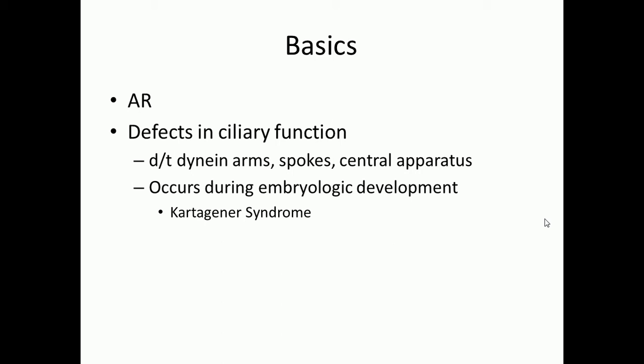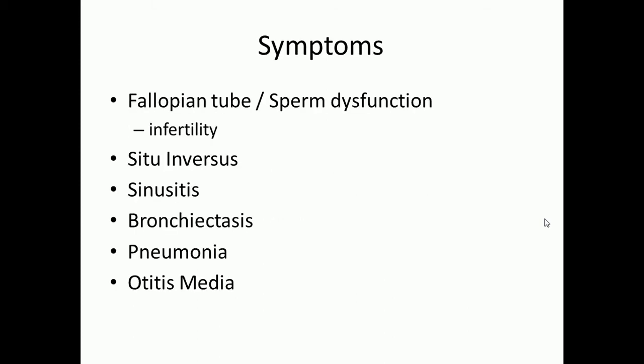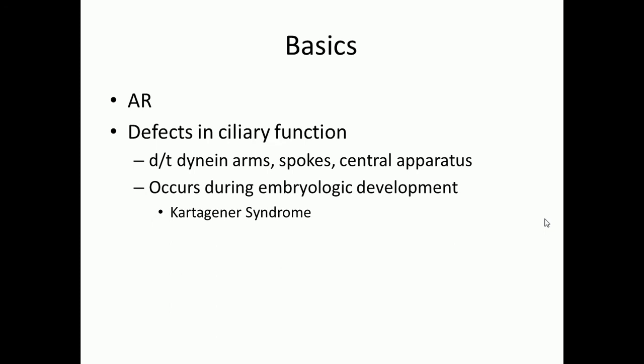Cilia are used throughout the body, including during embryologic development. A disorder called Kartagener syndrome results from primary ciliary dyskinesia. During embryologic development, cilia help determine organ orientation — your organs depend on cilia to find out where they ultimately end up. When you have a ciliary disorder, you get Kartagener syndrome. This results specifically from a dynein arm defect, as opposed to defects in the radial spokes or central apparatus.